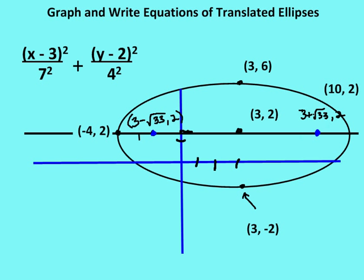I am now finished graphing the ellipse. I have the vertices, the co-vertices, the major and minor axes, the foci, and the center — all derived from this equation. Now we're going to move on to writing equations for ellipses, applying what we've already learned by looking at a graph and writing an equation.